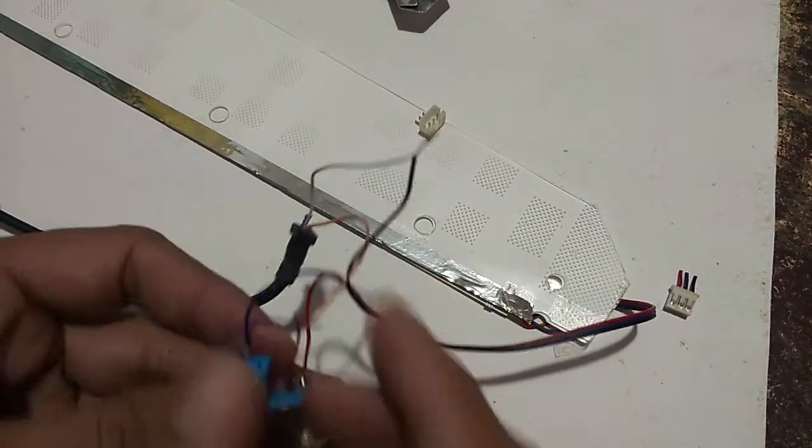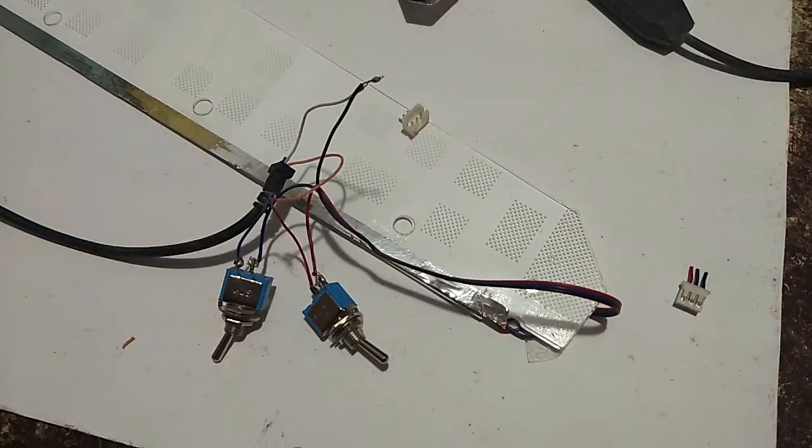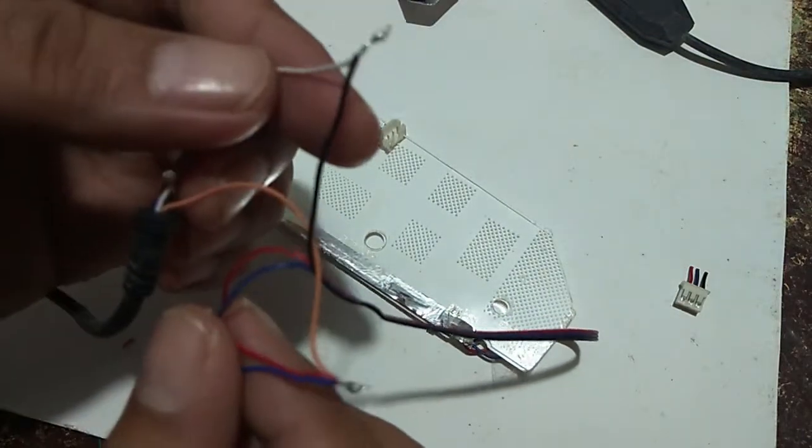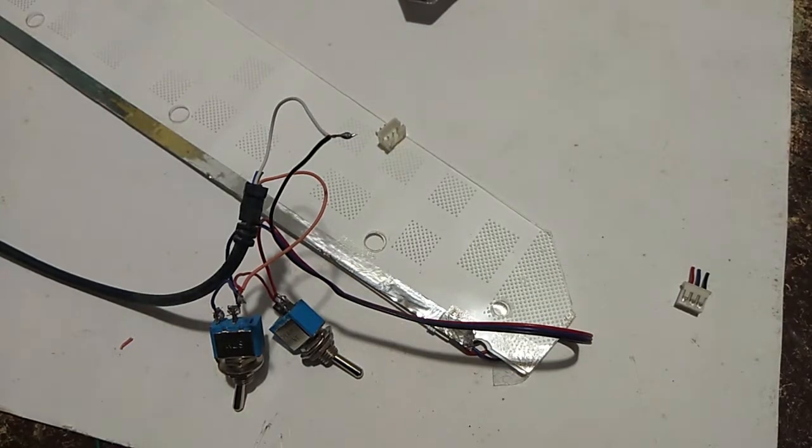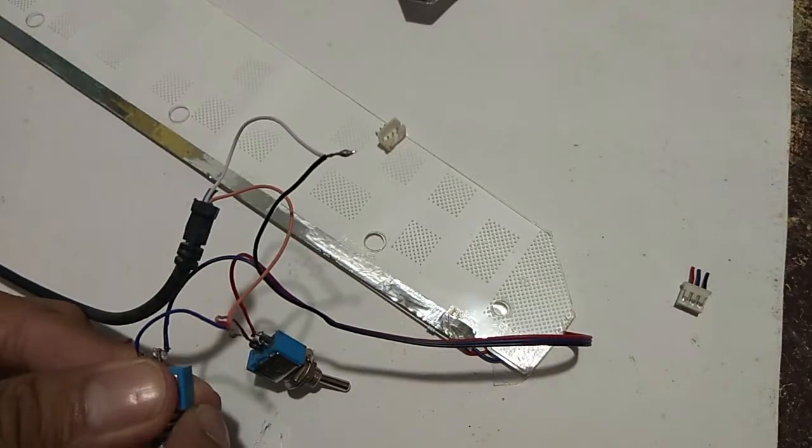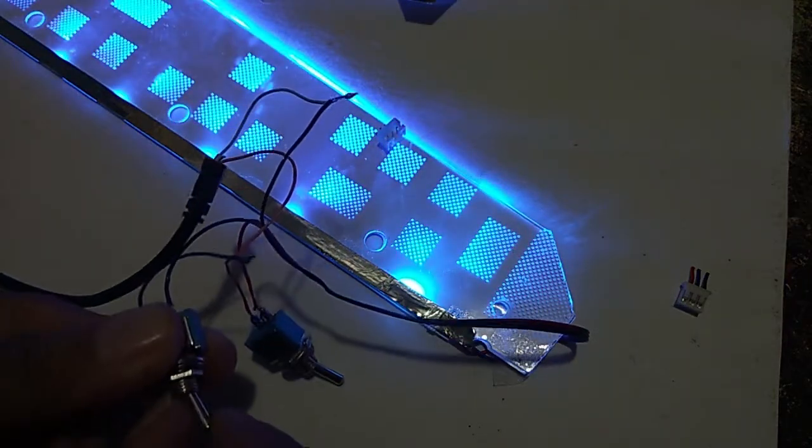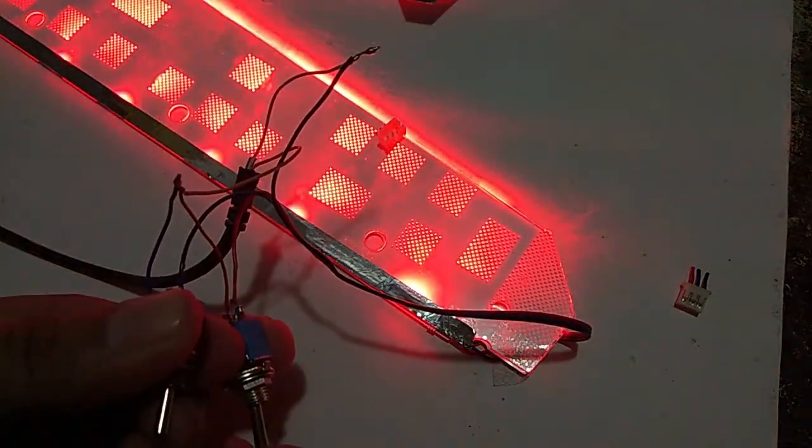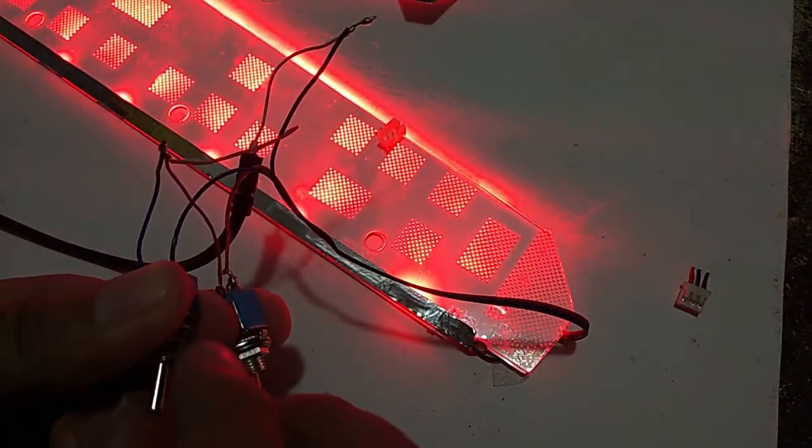So now we are ready to solder it together. The wires are soldered together. Let's try it one more time. Let's plug it in, turn it off. Let's turn the blue one, the red one. Let's turn it on together.